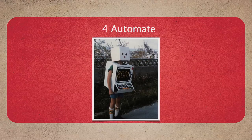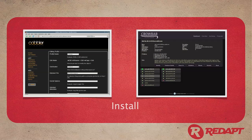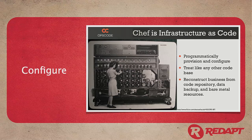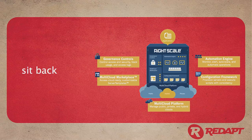Step four is automation. Do you really want to manage and patch and update hundreds of servers yourself? Hopefully the answer is no. Here are a couple of the tools we use on the bare metal side: we like Cobbler and Crowbar. We also like Chef for managing and doing configuration management of our physical infrastructure. And the end-all of automation is RightScale — they've done all the heavy lifting on the configuration automation side to make life easy so we can just sit back and deploy our cloud.